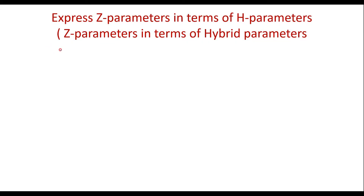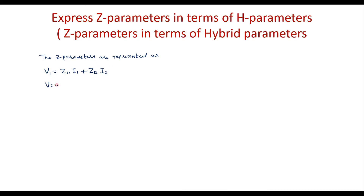First, let me write the equations of Z parameters. The Z parameters are represented as V1 is equal to Z11·I1 plus Z12·I2 — I will call this equation A — and V2 is equal to Z21·I1 plus Z22·I2 — I will call this equation B.